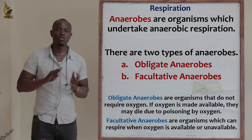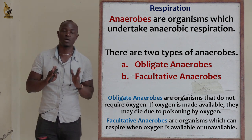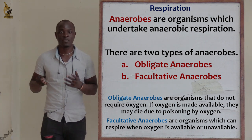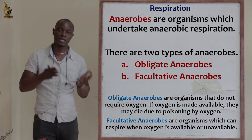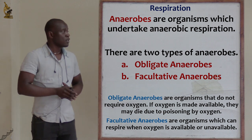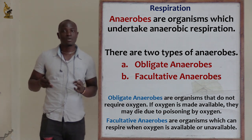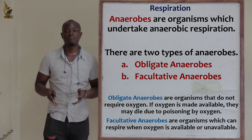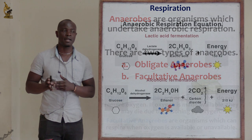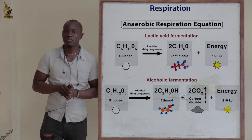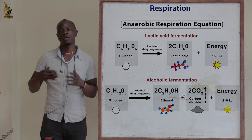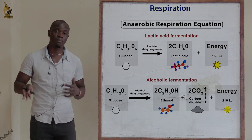Remember: obligate anaerobes completely do not require oxygen and will die if oxygen is available. Facultative anaerobes can survive in either the presence or absence of oxygen. However, facultative organisms tend to survive better when oxygen is present. When oxygen is not present, some will produce ethanol — behaving like plants — and some will produce lactic acid, behaving like animals.